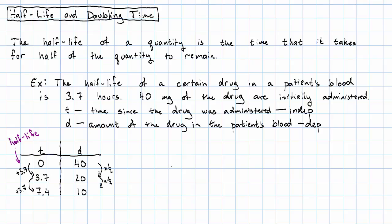What's our equation going to be? The amount of drug left in the bloodstream is the starting amount. How many times is it multiplied by a half? It's multiplied by a half every time 3.7 hours pass.